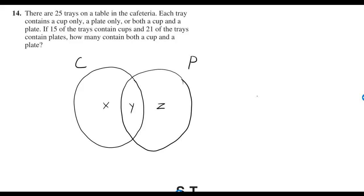If 15 of the trays contain cups and 21 of the trays contain plates, how many contain both a cup and a plate?